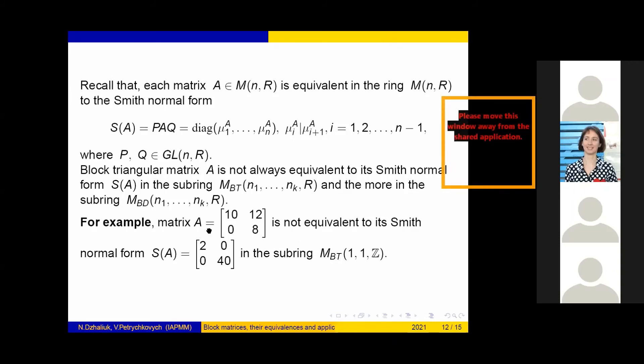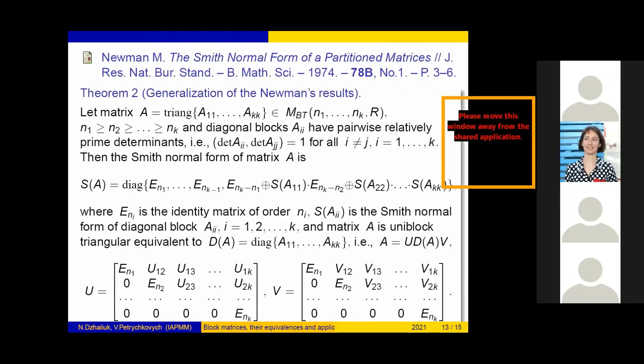For example, matrix A is not equivalent to its Smith normal form S(A) in the subring M_BT. So, a natural question establishes the conditions under which the block triangular matrix is equivalent to its Smith normal form S(A) in the subring M_BT.